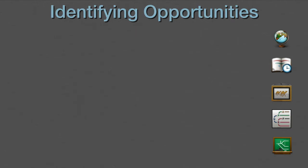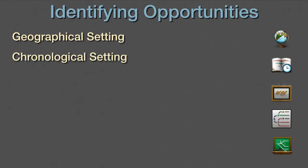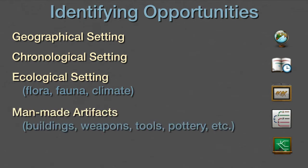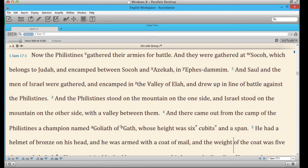There are a number of different kinds of information that are best communicated using graphics. They include the geographical setting, using an atlas, or the chronological setting, using a timeline. The ecological setting would include photos of flora, fauna, or climate, as well as man-made artifacts — buildings, weapons, tools, pottery — well illustrated with photos or illustrations. Also ask if there are parts of the passage that might be made clearer through the use of a chart or a diagram. This covers a wide range of possibilities — a syntax tree, a sentence diagram of a complicated passage, or even a diagram of a process like pressing grapes into wine. These are the kinds of things that will help your audience understand those passages.